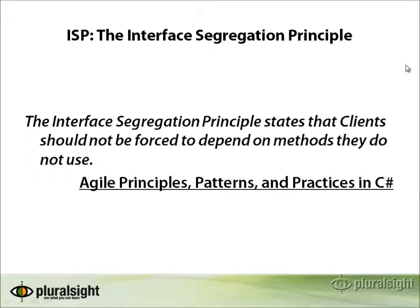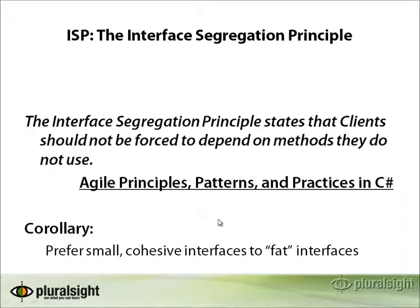The Interface Segregation Principle basically states that clients should not be forced to depend on methods that they do not use. This comes from the excellent book Agile Principles, Patterns, and Practices in C#. The corollary to this, of course, is that you should prefer small, cohesive interfaces to fat interfaces.